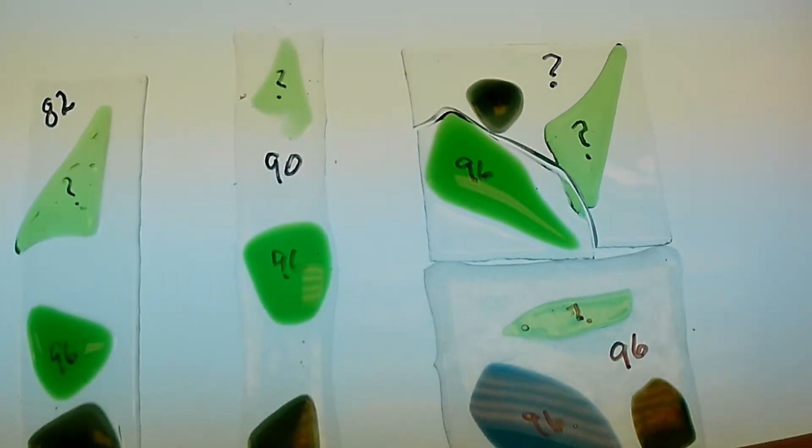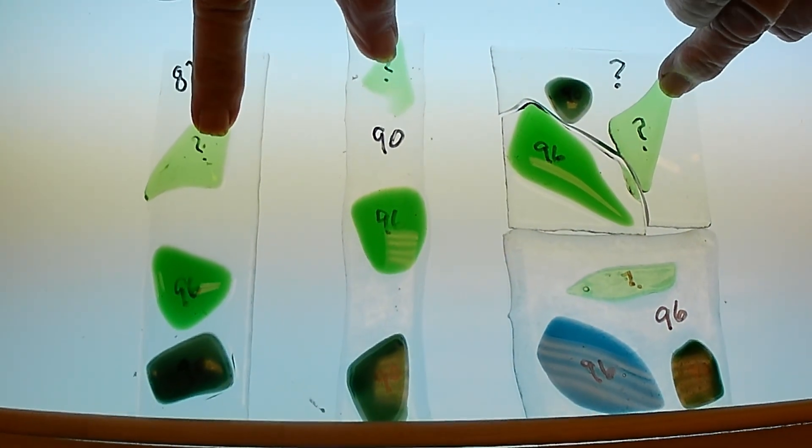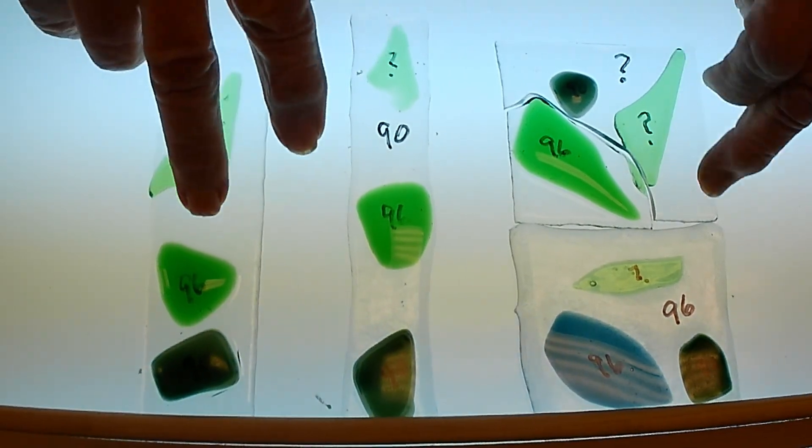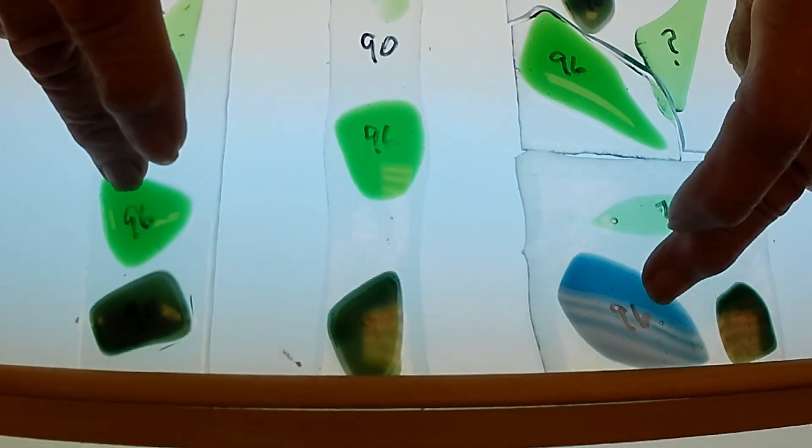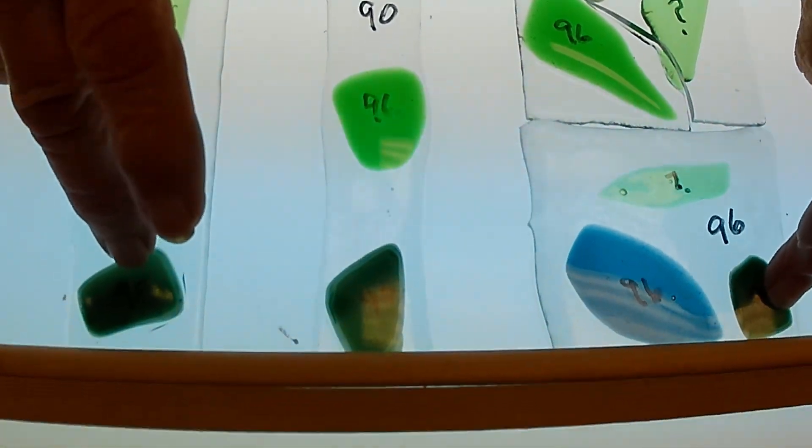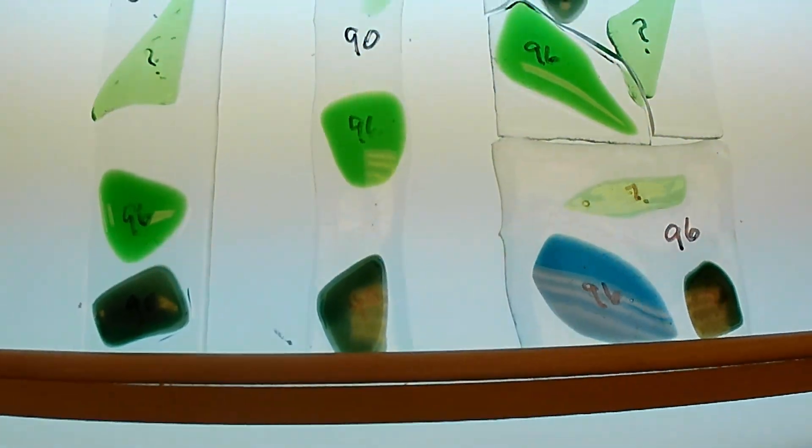Now, on each of these I put an unknown bottle scrap, a 96, and a 90.